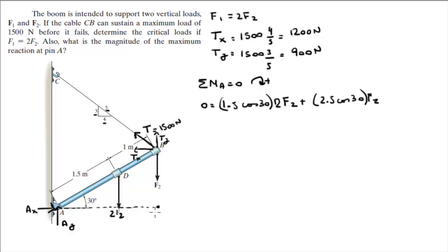Now we have that same distance, but TY is pulling it up, so it's minus. Minus 2.5 cosine of 30 times TY.